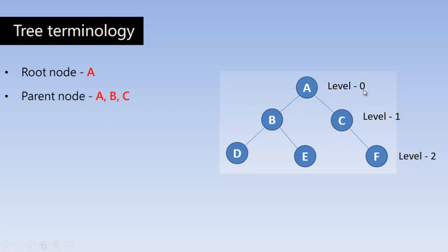Parent node means a node having at least one child. Here A has got two children B and C so A is the parent node. And B and C nodes have also got children. So B and C are the parents. B is the parent of D and E. C is the parent of F and A is the parent of B and C.